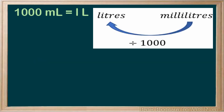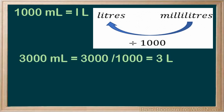A milliliter is much smaller than a liter. You will divide by a thousand to change from milliliters to liters. Three thousand milliliters would be three thousand divided by a thousand, or three liters.